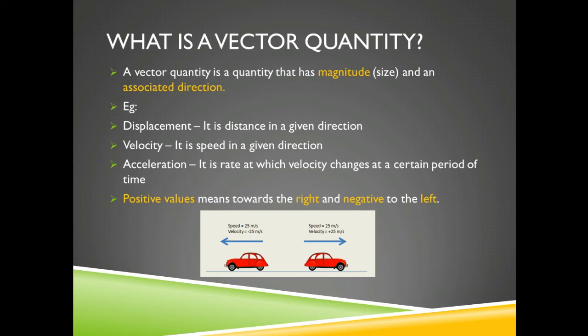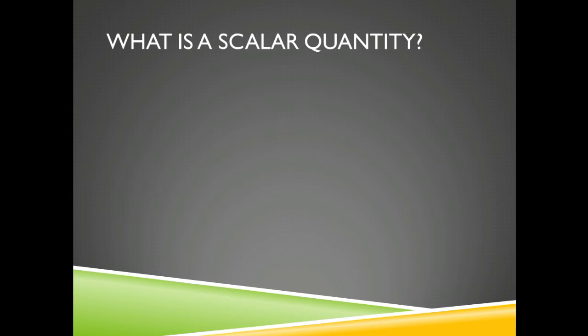Let's go to scalar quantity. So what is a scalar quantity? It's a quantity that has magnitude only and no associated direction. That's the key difference. Both these quantities have magnitude but scalar doesn't have an associated direction. And examples here include speed, distance and time.